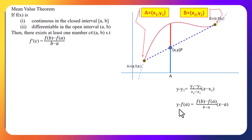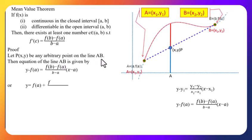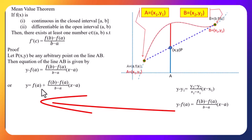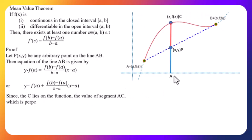So the equation becomes: y - f(a) = [f(b) - f(a)]/(b - a) × (x - a), or y = f(a) + [f(b) - f(a)]/(b - a) × (x - a).